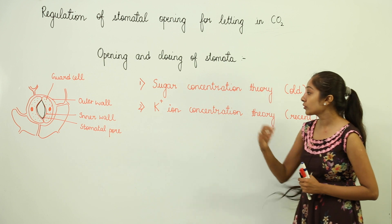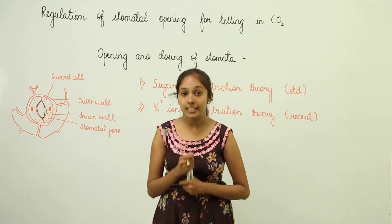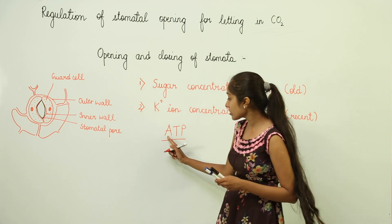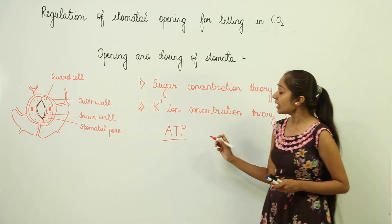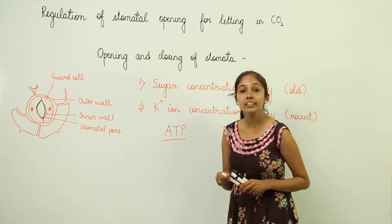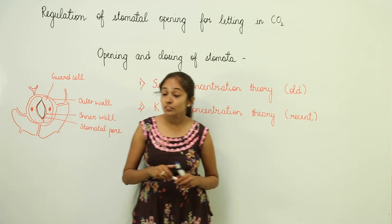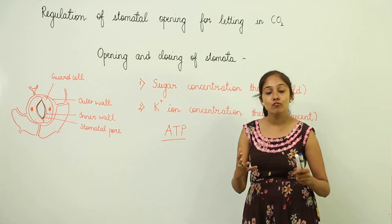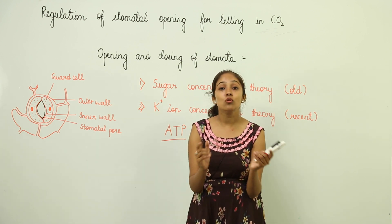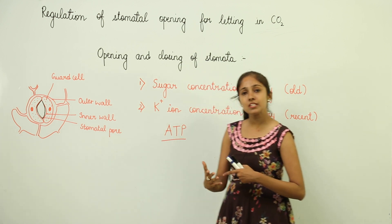The more recent theory is the potassium ion concentration theory. When photosynthesis is going on during daytime, this leads to the formation of ATP — adenosine triphosphate — which is the energy currency of the cell. This theory says that the opening and closing of stomata is regulated by the potassium ion gradient. Because of ATP formation, potassium ions are going to enter the guard cells, making them hypertonic. More and more water enters the guard cells, they swell up, leading to the opening of the stomatal pore and diffusion of CO2 inside.